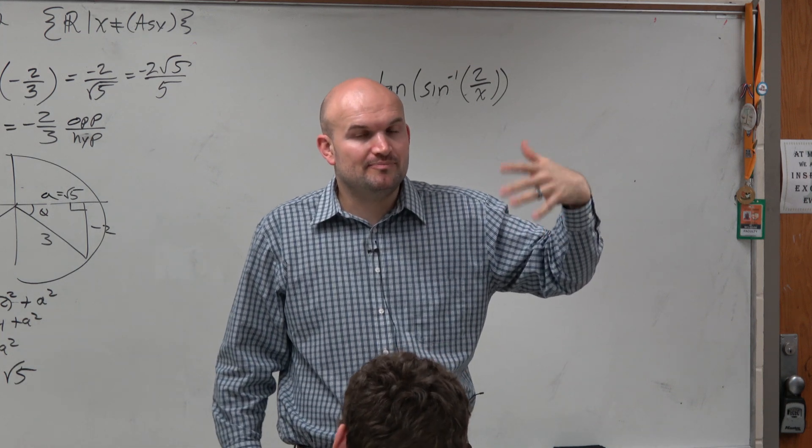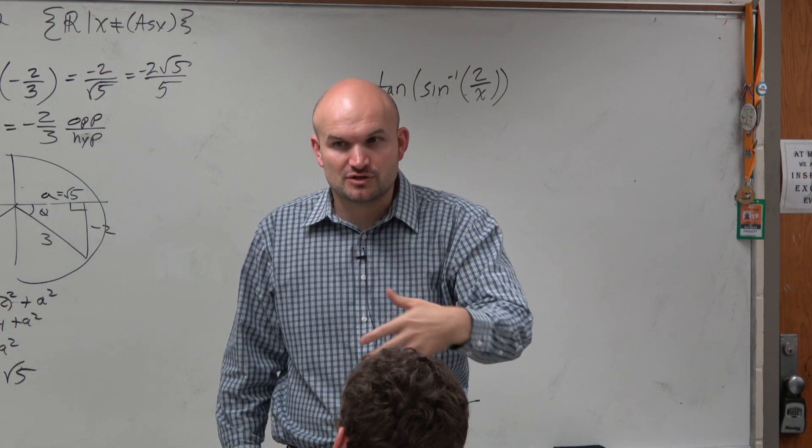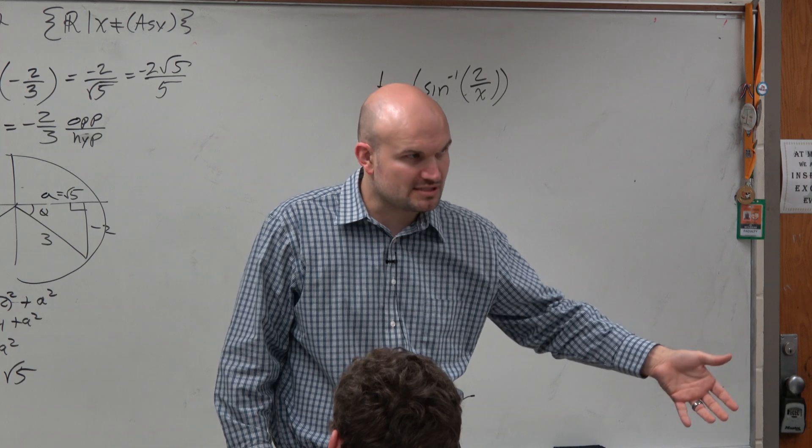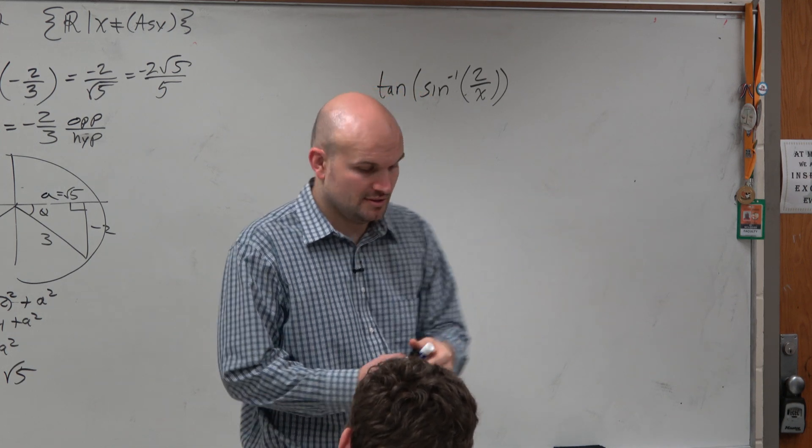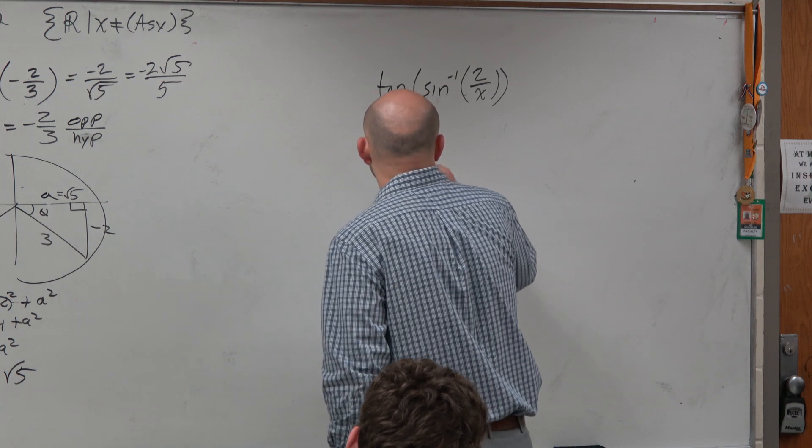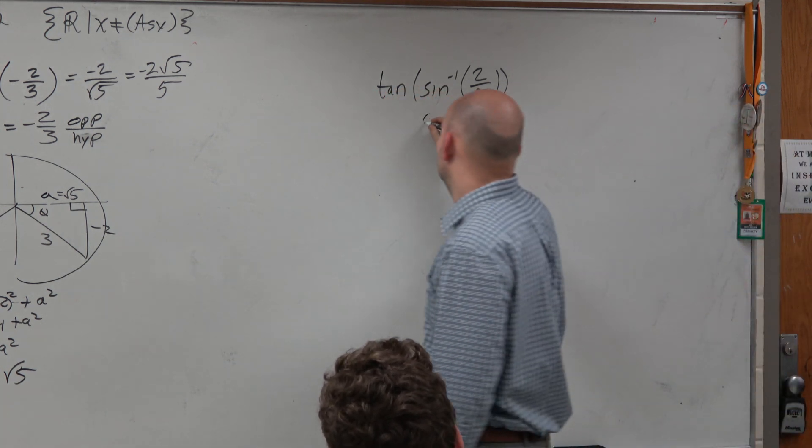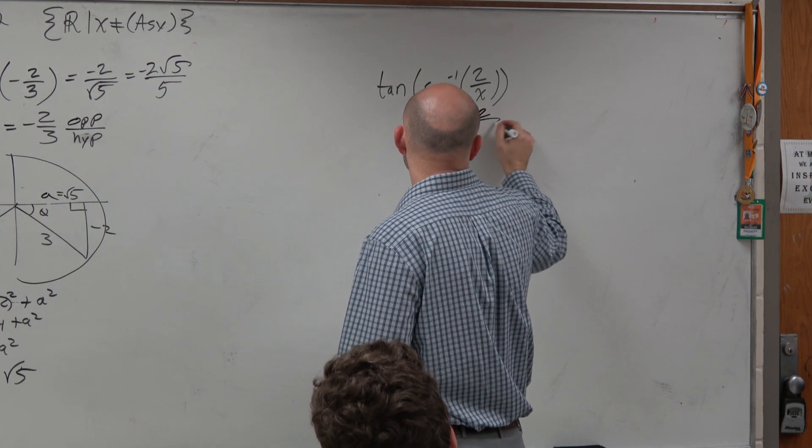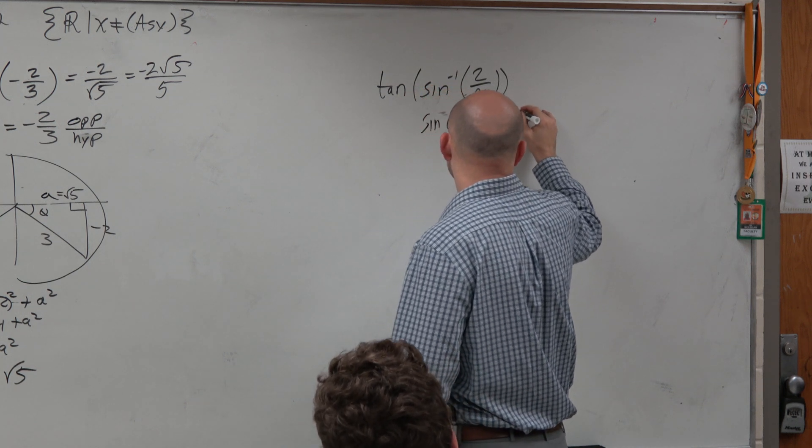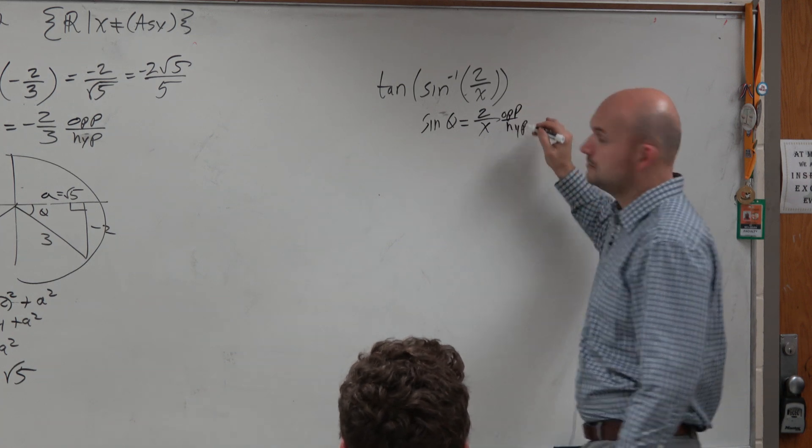And again, we have no idea if it's on the unit circle. So we don't want to use y, nor do we want to fall asleep. What we want to do then is set up a representation, just like we did in the last problem. So can we understand this as sine of some angle is equal to the opposite over the hypotenuse?